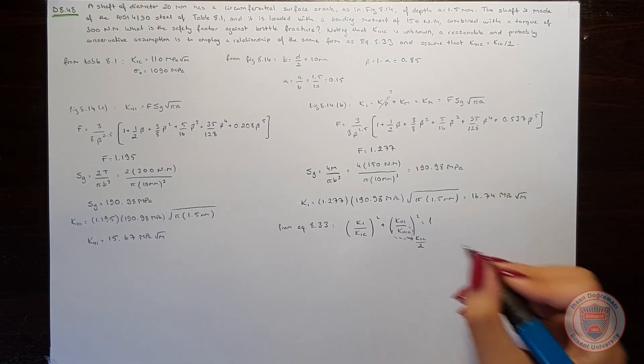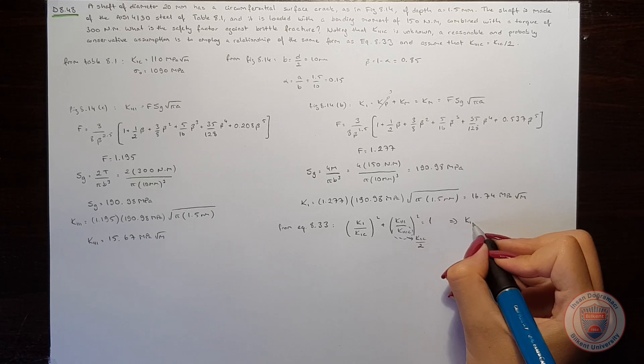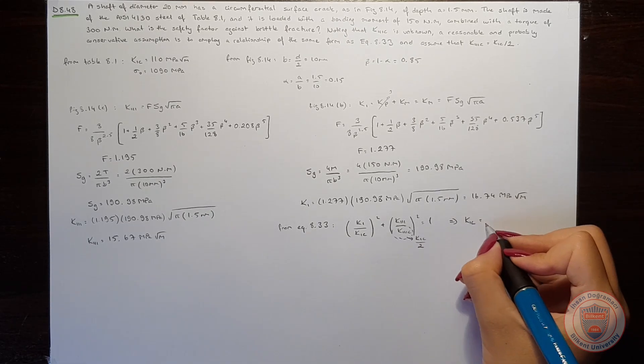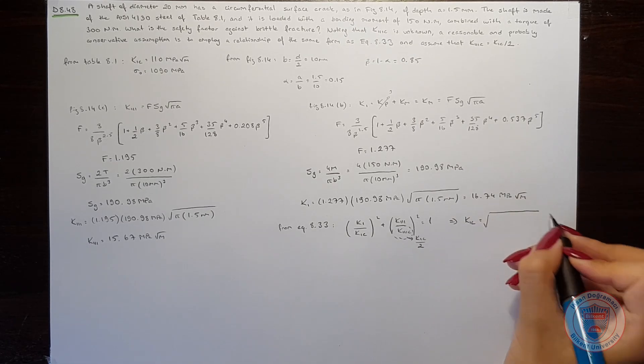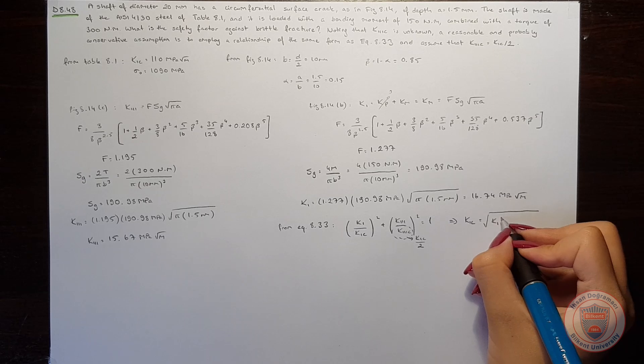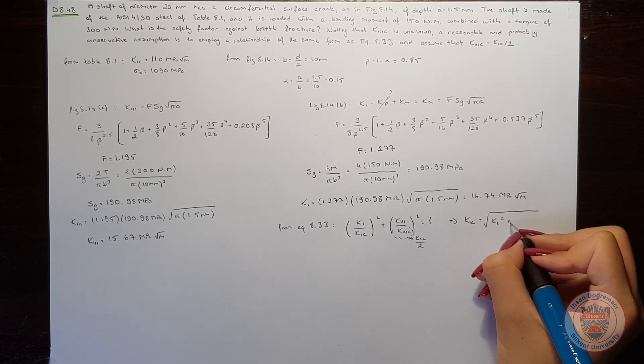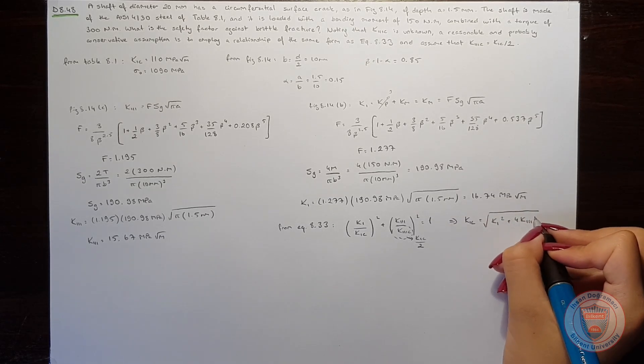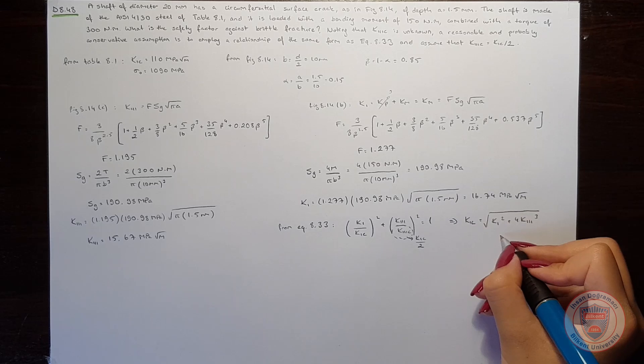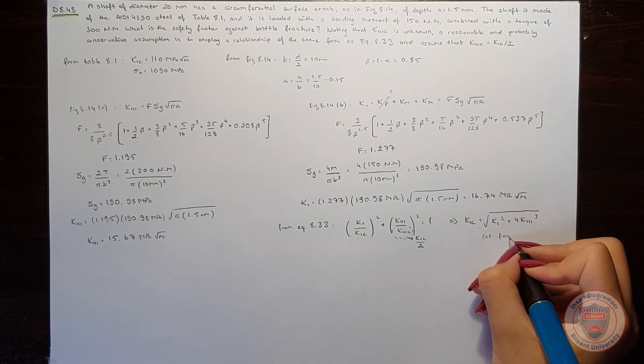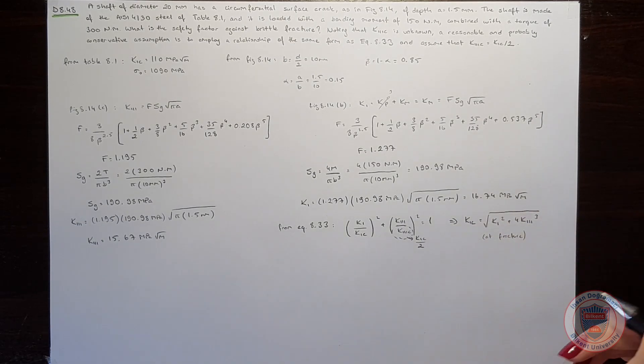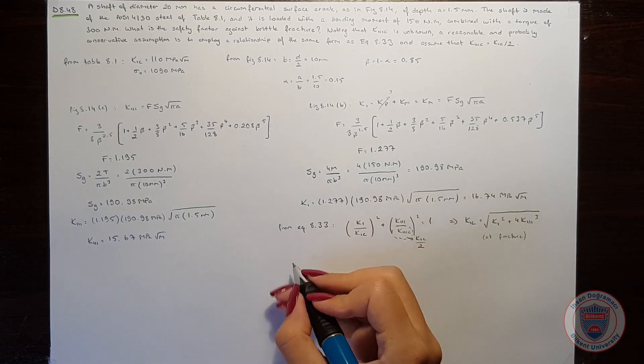Therefore, K1C equals the square root of K1 squared plus 4K3 squared at fracture. Let's define K-bar.